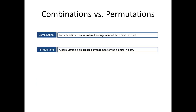On this slide, I put the definition of a combination and a permutation side by side so we can compare them. And you'll notice that there's only one word difference between the two. This is a great example of why it's important to learn mathematical definitions exactly. Changing one word — for example, ordered versus unordered — can have a dramatic change in what the definition means.